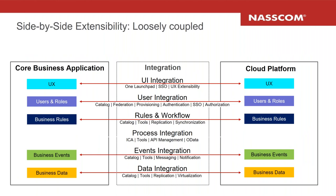Another thing you can do is extend the core business application platform. There are a couple of things you can do with a cloud platform: you can develop a whole new application, or you can extend some functionality from your existing core application at different levels — integration, user experience, rules, events integration, data integration, and so on. This chart represents the different layers where you can do these extensions.